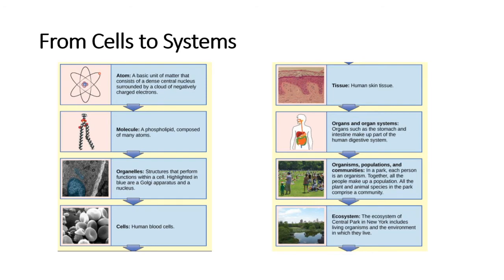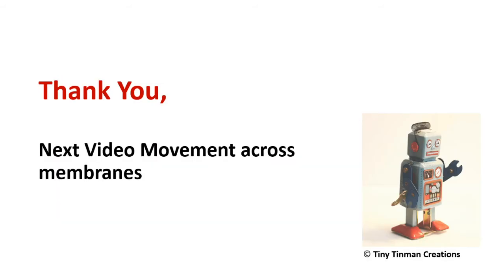Organisms are individual living entities. For example, each tree in a forest is an organism. Single-celled prokaryotes and single-celled eukaryotes are also considered organisms and are typically referred to as microorganisms. Thank you. Next video: movement across membranes.